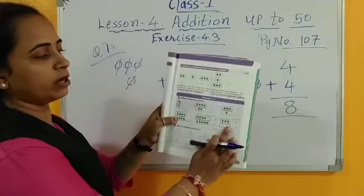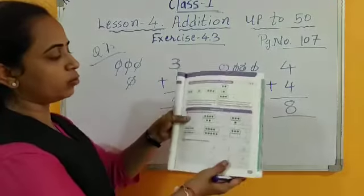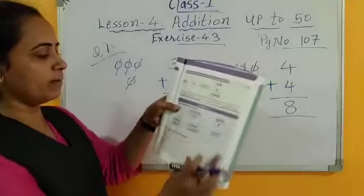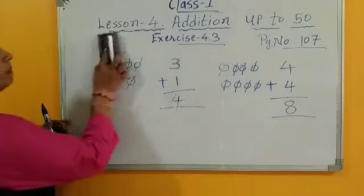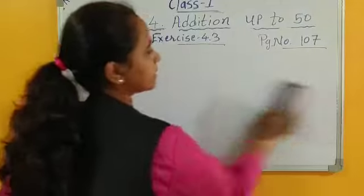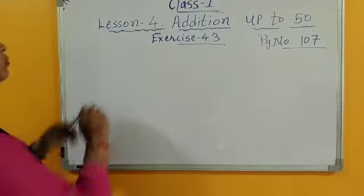Now, others to yourself. Now question number 2. Add the following numbers. Only numbers are given. What is this?